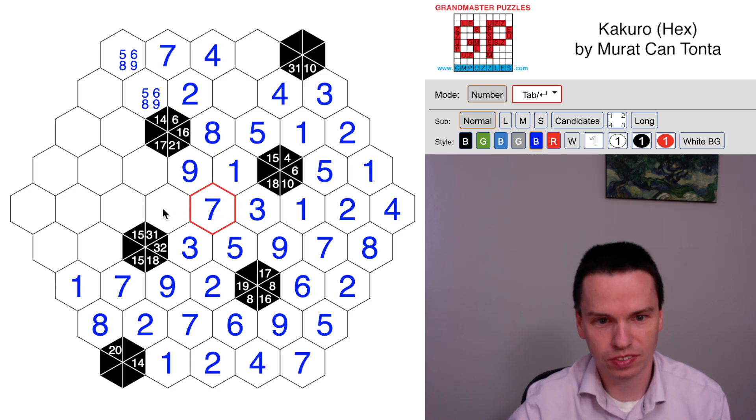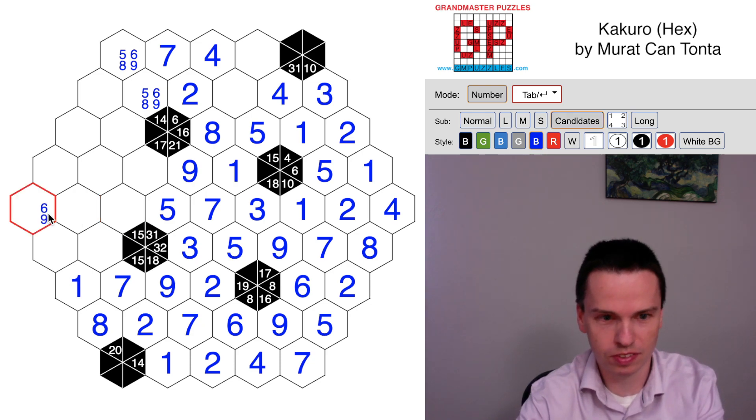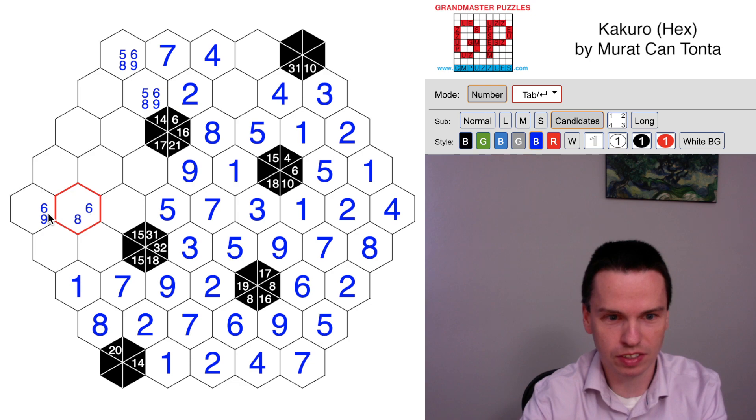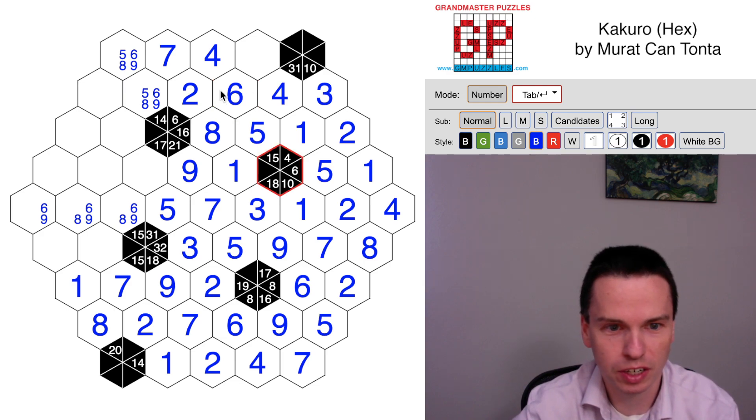We have 1, 2, 3, 4, and then 7 here. So we have 5, 6, 8, 9 to go in the space. This cell sees 8, 9, and 6. So this is a 5. And that means we have 8, 9, 6 as the remaining space. This is 6, 9. This is 8, 6, 9. This is 8, 6, 9. We have 5, 6, 4 to finish this coming up.